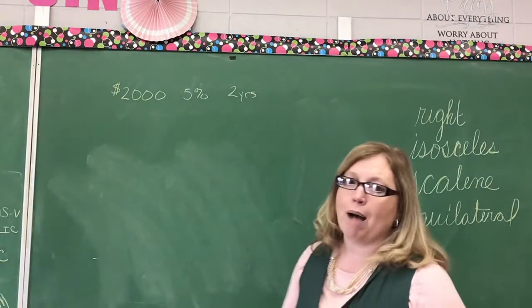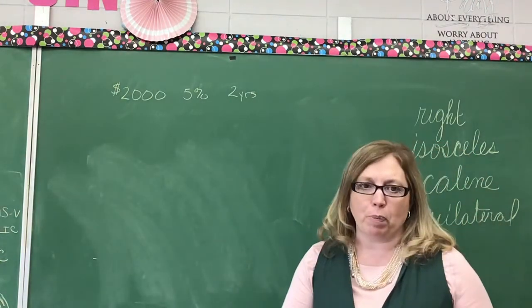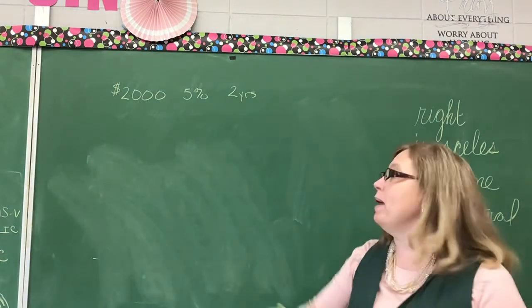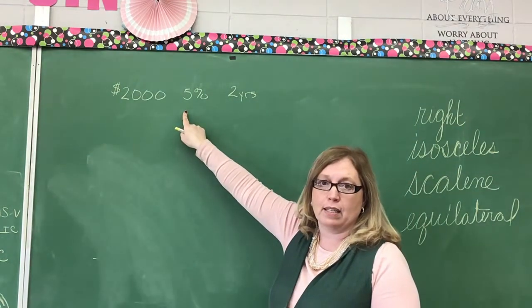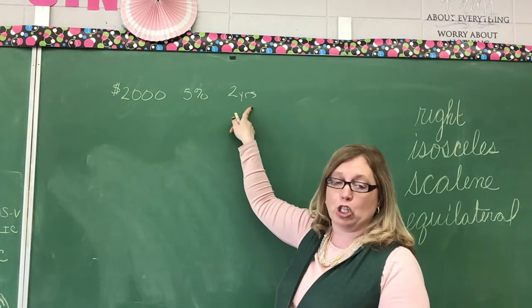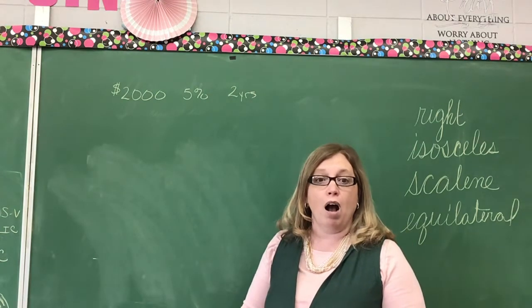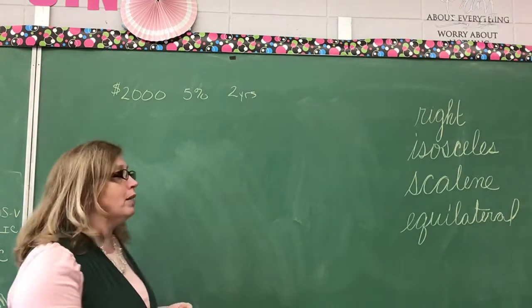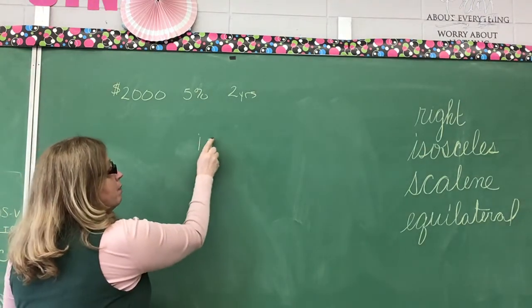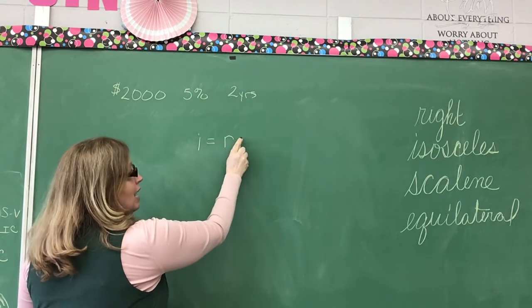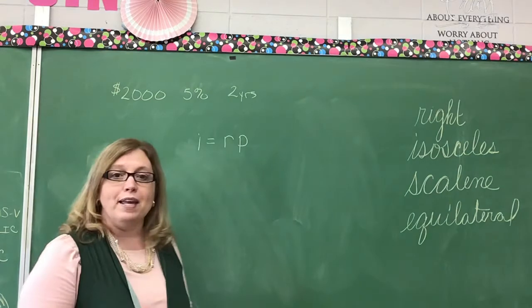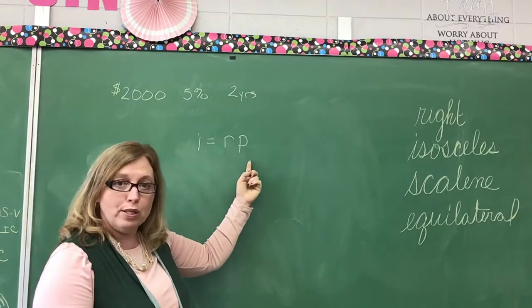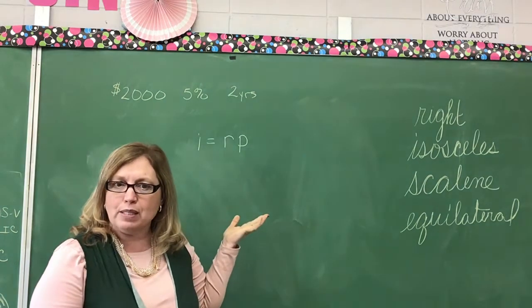Let's look at this last problem for today. It is an interest problem. If you put $2,000 into the bank, and the bank agrees to pay you at the rate of 5% interest, you're going to leave it there for two years, and it's going to be compounded annually. How do you solve that? Well, first, you have to know your formula. Interest equals the rate times the principal or the amount. How do I find my interest? Take my rate times principal. What's the other word for principal? Amount.